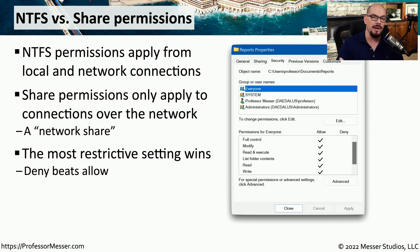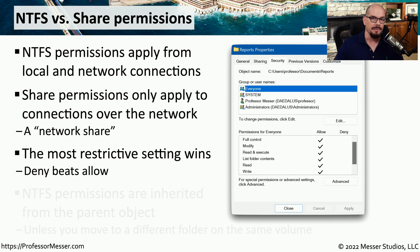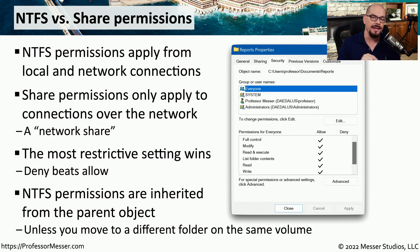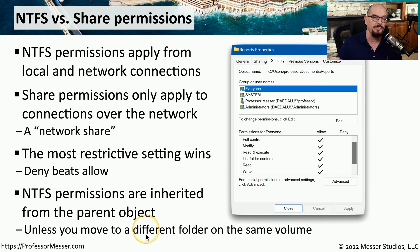Between both of these, the most restrictive access is the one that has priority. So if you're connecting over a network to a share, and that share has full access to a folder, but the NTFS permissions set it to read only, then the only access you would have would be read only. You also have to remember that NTFS permissions are inherited from the parent. So even if you don't explicitly assign rights and permissions to a folder or a file, it will use the permissions associated with its parent. The only time where that's different is if you take an NTFS file or folder and move it to a different folder on the same volume — in that case, Windows changes a pointer to where that file is located but keeps the same permissions that it originally had.